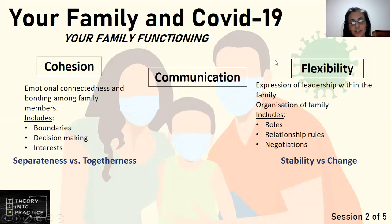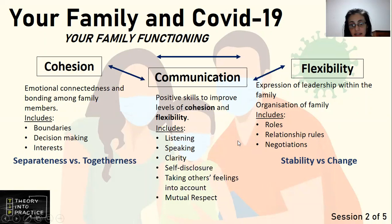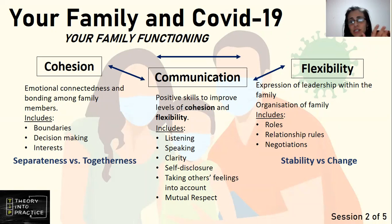Then, to link these two, we have the big C, which I mentioned earlier — communication. Communication is positive skills which improve both cohesion as well as flexibility. This is done by listening, speaking, asking, and making sure clarity is everywhere so everyone understands what the other person is trying to say, self-disclosure, taking your family members' feelings into account, and just having respect for each other. By doing this, both cohesion and flexibility will really improve, because everything depends on how well the family can actually communicate.